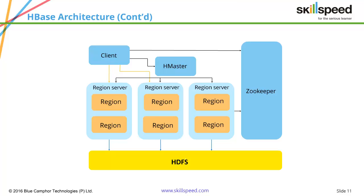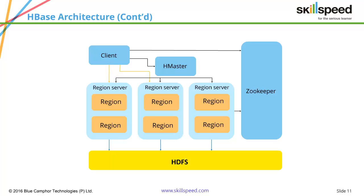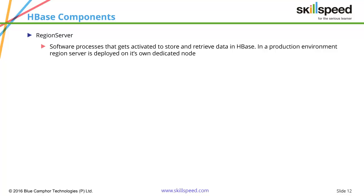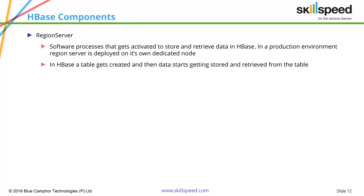In the detailed HBase architecture, a client first connects to ZooKeeper to get metadata information about the data it wants to read or write. Once it has the metadata, it contacts the region servers, and from the region servers it can read or write the data. Region servers are software processors that get activated to store and retrieve data. In production, they are deployed on their own dedicated nodes.